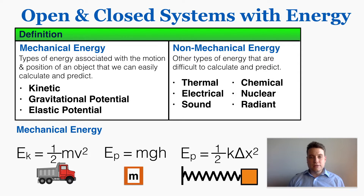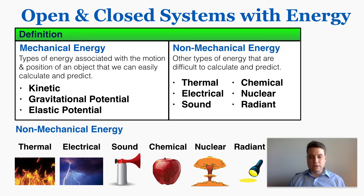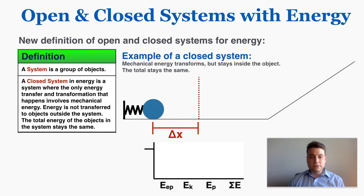Non-mechanical energy is any type of energy that's not mechanical energy. These other types of energy do not depend on an object's position or movement and are a bit harder to calculate and predict. Using this definition, a closed system in energy is a system where the only energy transfer and transformation involves mechanical energy, and energy is not transferred to objects outside the system — so the total energy of the objects in the system stays the same.